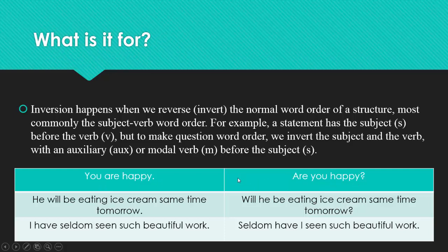It is possible to do the same way with every tense in English grammar. For example, he will be eating ice cream same time tomorrow. Will be eating. Future continuous tense. The question will be: Will he be eating ice cream same time tomorrow? Will instead of he. They switched places. Inversion happened. This is an inverted word order. Another example: I have seldom seen such beautiful work. We could invert the word seldom and put it in the first place. Seldom have I seen such beautiful work.